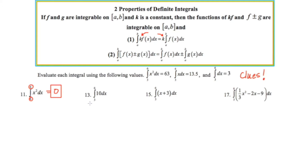Looking at example 13, this is the definite integral of 10 from 3 to 6. Since 10 is a constant, I can move it out in front and write this as 10 times the definite integral from 3 to 6 of dx. This becomes our third clue, which is equal to 3. So it's going to be 10 times 3, or 30.